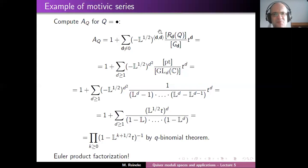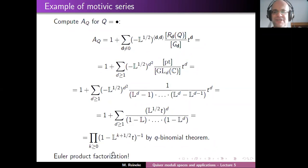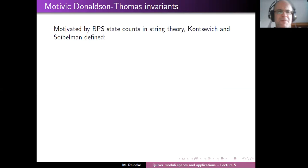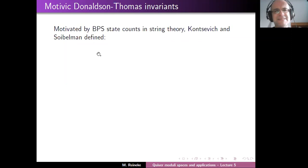This product factorization serves a dual purpose: showing motivic generating series are computable and exhibiting the first example of an Euler product factorization — which is the entry point for motivic DT invariants.